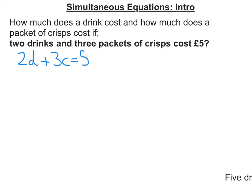What's different here compared to many other equations you've seen before is that I have two letters — two variables in my equation. So first I'm going to think: are there any numbers that I can put in that would work for this? Well, if I had D equal to one and C equal to one, that would work. Likewise, if I had D equal to 1.75 and C equal to 0.5. So there's more than one answer.